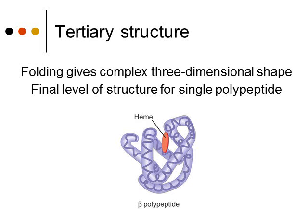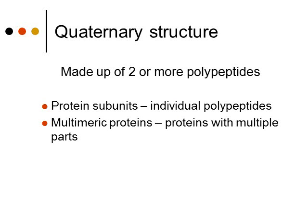If you have more than one polypeptide that are going to interact with each other, that's when you get to the fourth level — the quaternary structure. It's made up of two or more polypeptides, and those polypeptides are called protein subunits. Those subunits come together to form multimeric proteins.